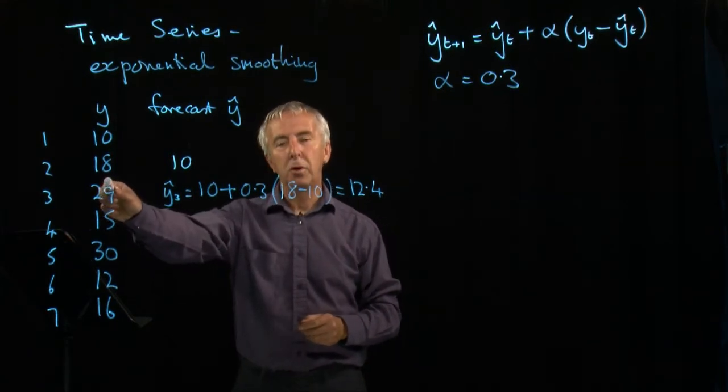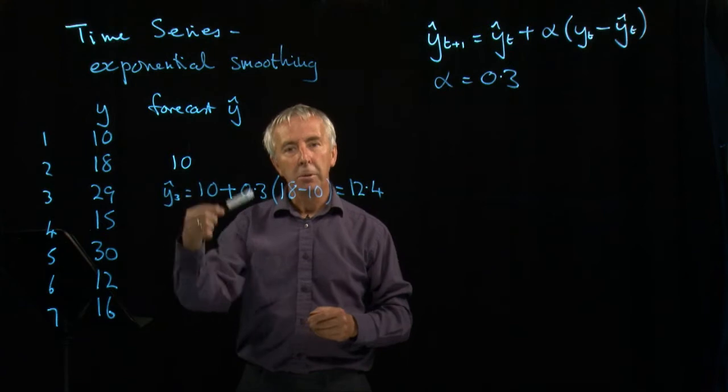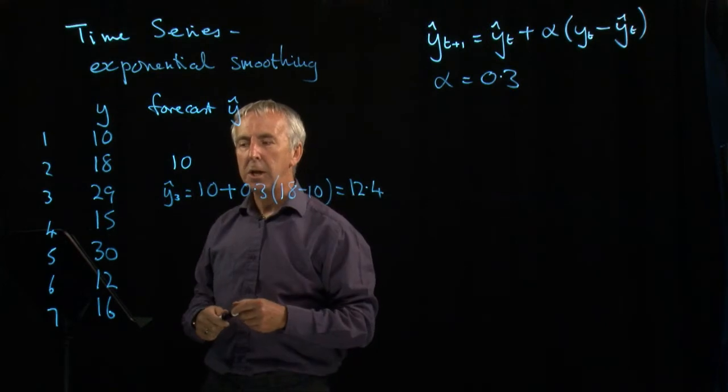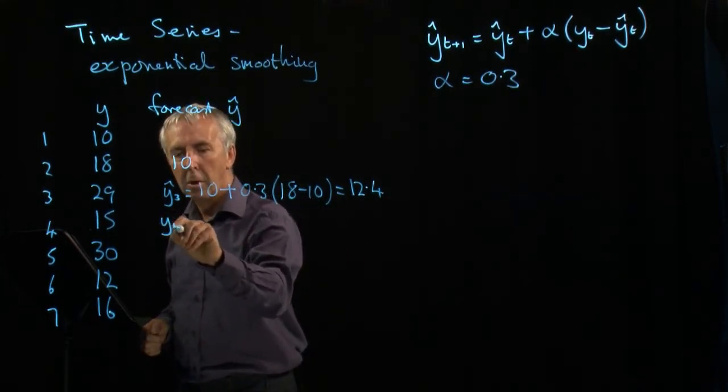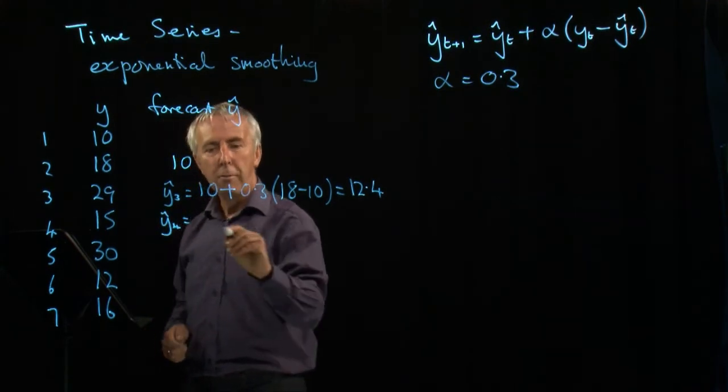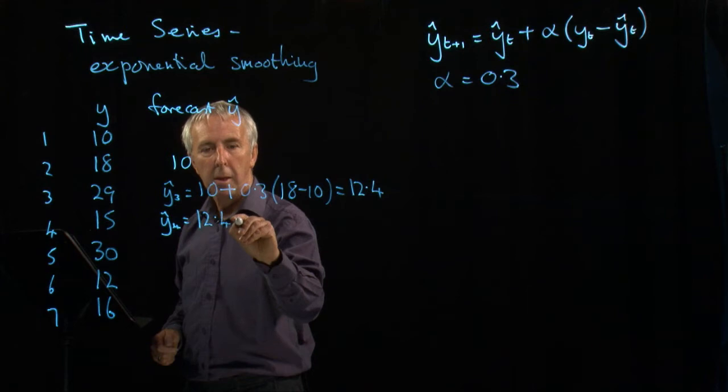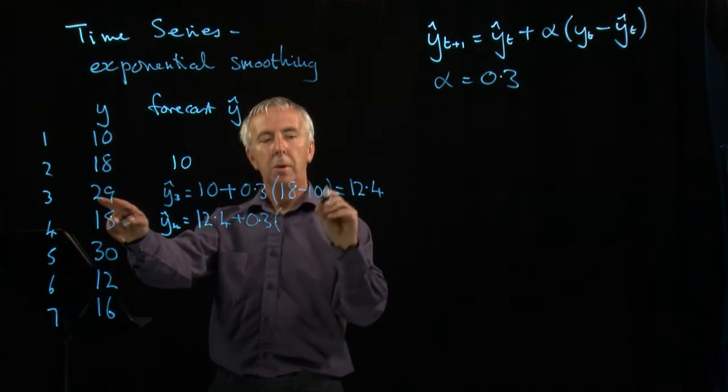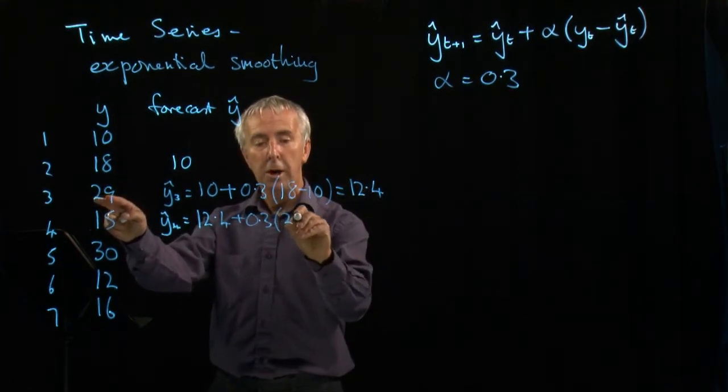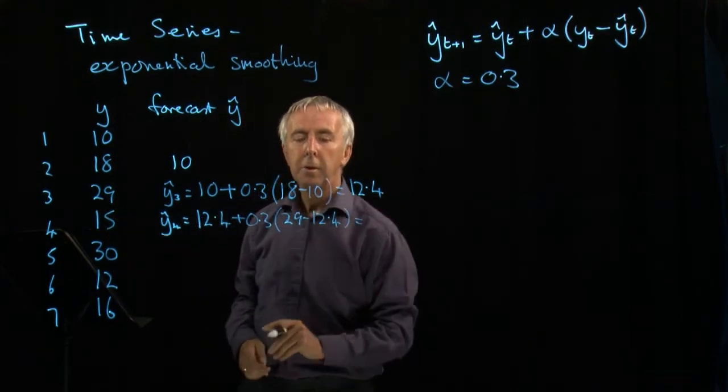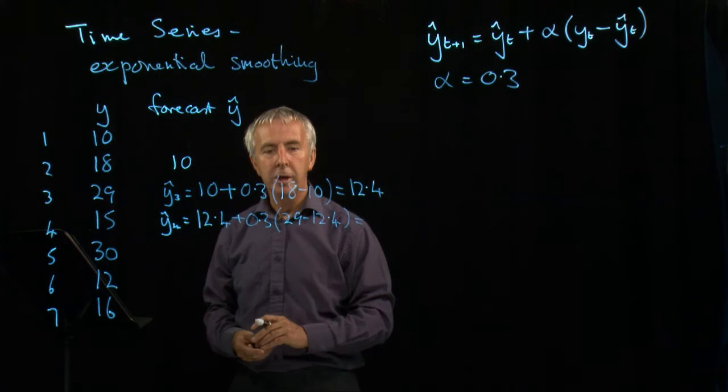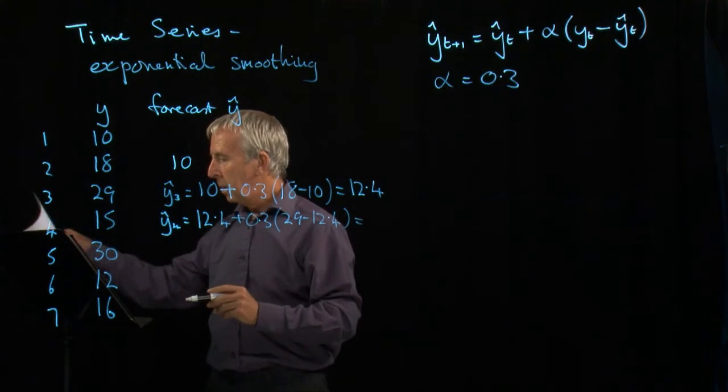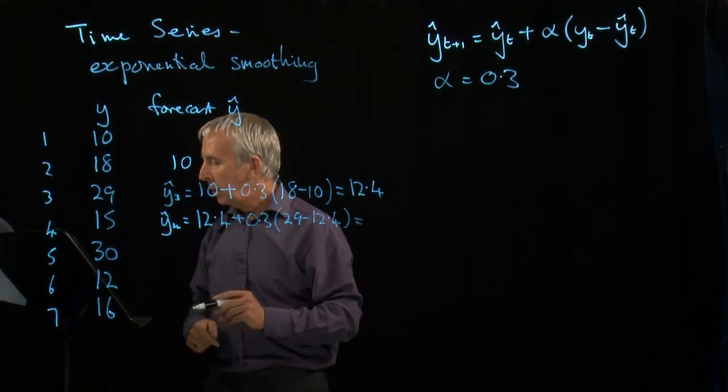I was way out, it actually shot up to 29. So again, for my following forecast, because I'm not expecting any pattern, just because it went up to 29 doesn't mean it's always going to stay there. So my next forecast, y4, will be my previous forecast plus 0.3 times, how wrong was I that time? Well, I thought it'd be 12.4 but it was actually 29. So the error was 16.6 multiplied by 0.3, add on to 12.4, I can't do that in my head, and we get 17.4.